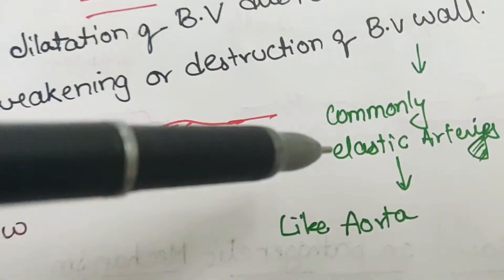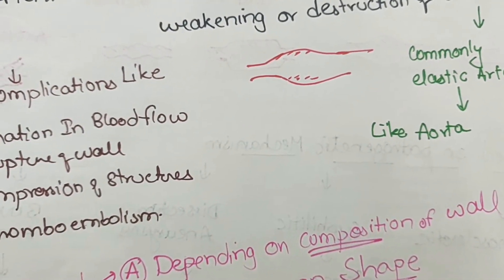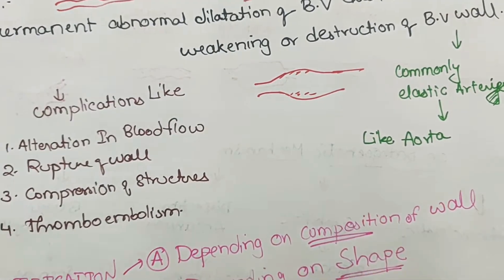Most commonly involved are the elastic arteries, and most commonly aorta is involved. In the circle of Willis, we can see berry aneurysms.